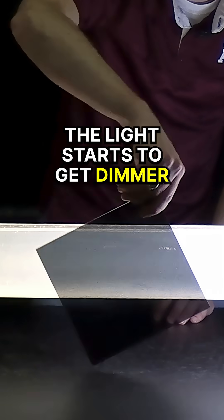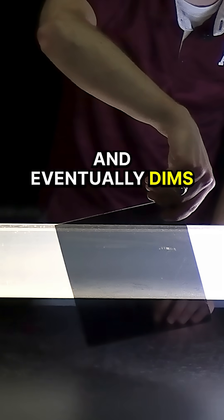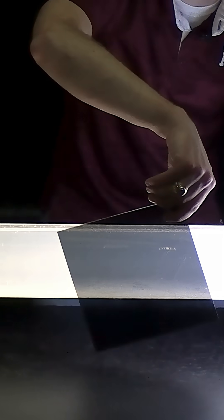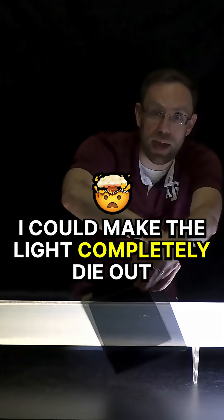But as I rotate the polarizer, the light starts to get dimmer, and eventually dims the most that I can possibly get to. If I add a second polarizer, I could make the light completely die out.